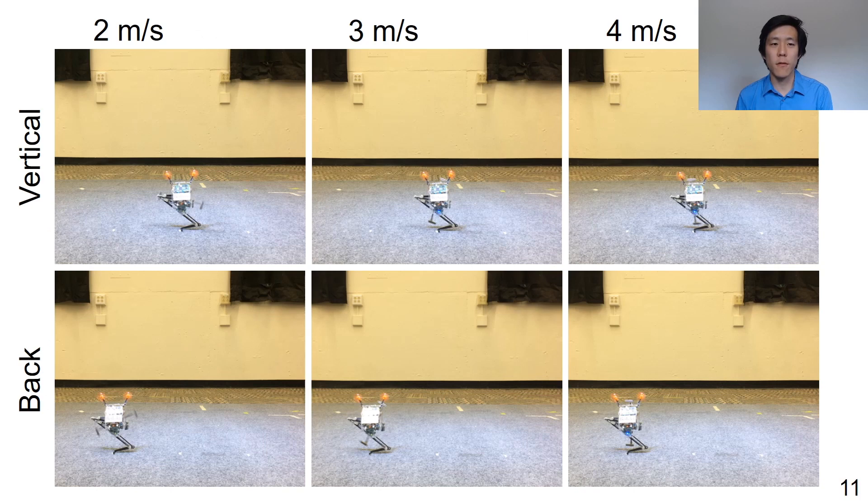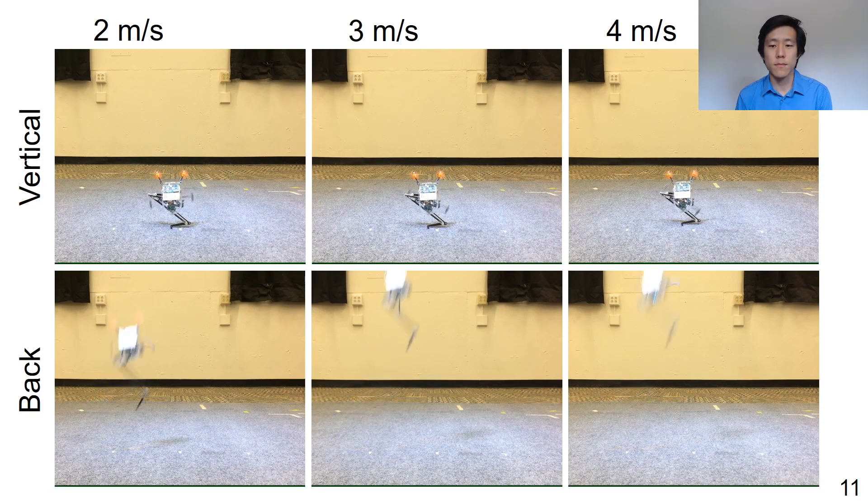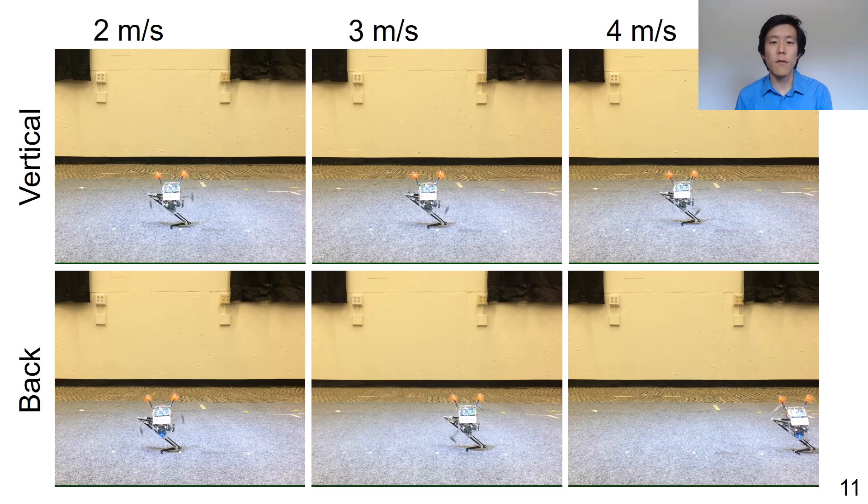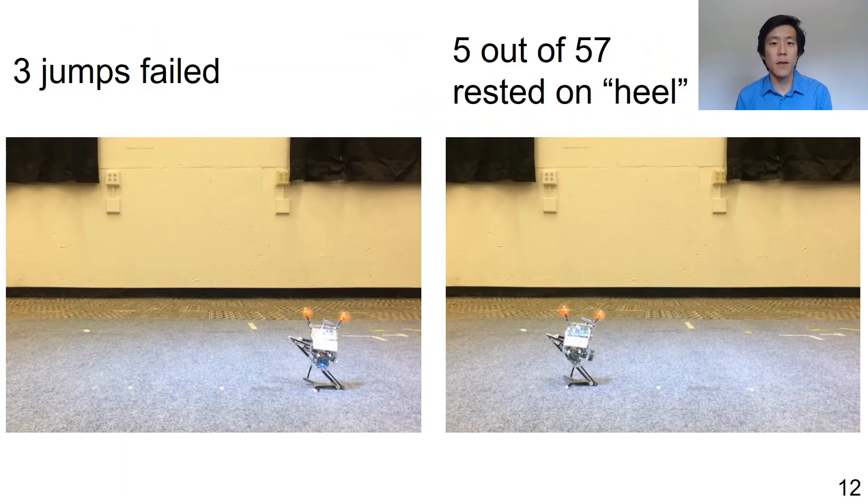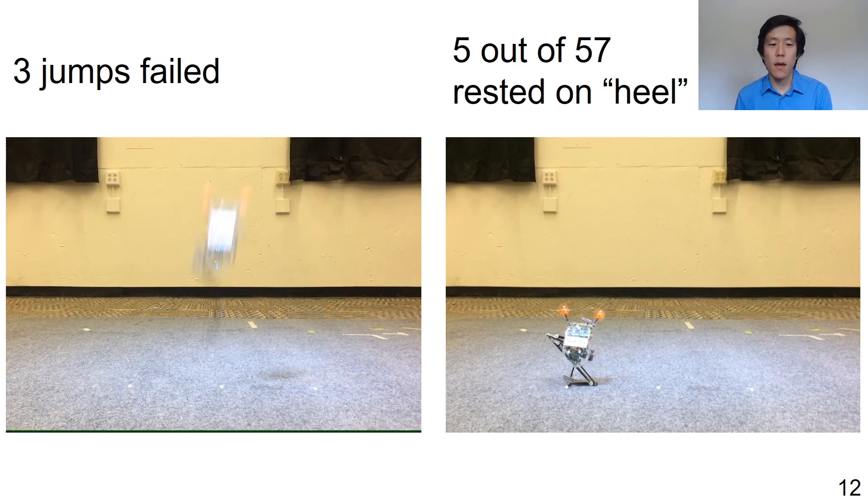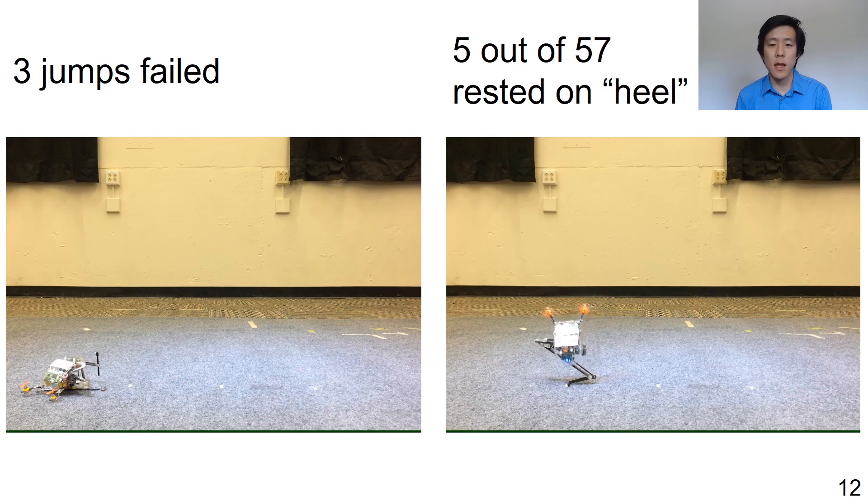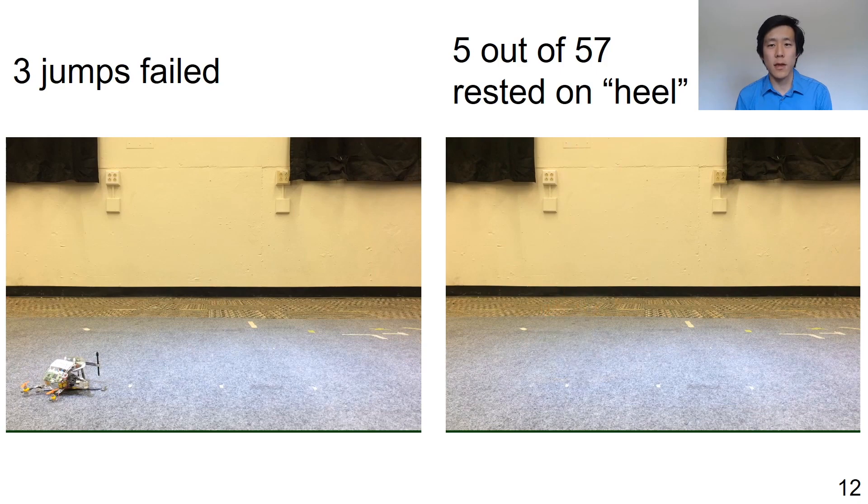To test the reliability of landings experimentally, we ran a series of 60 trials. The robot was commanded to jump at 3 different velocities and 5 different lean angles, forwards and backwards. This is a series of 6 videos showing some representative jumps vertically and backwards. Out of these 60 trials, Salto successfully landed upright 57 out of 60 times, or 95% of the time. In 3 of the trials, the robot fell forwards. In 5 of the trials that landed upright, the robot rested not just on its foot as intended, but also on the back portion of its linkage, or the heel.